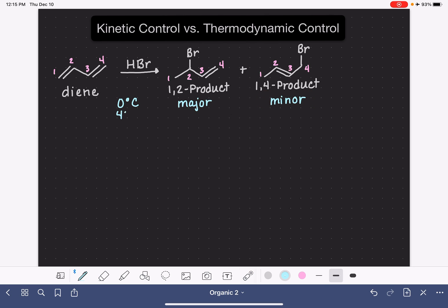If we heat the reaction up quite a bit to 40 degrees C, which is pretty hot, we see the reverse distribution of the product. The 1-2 product is our minor product and the 1-4 product is our major product.